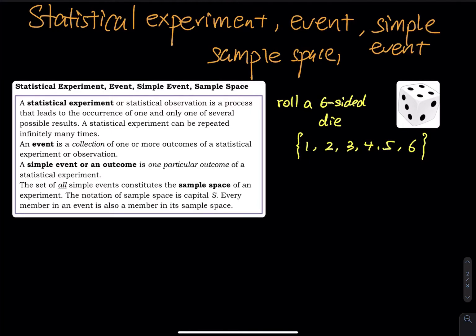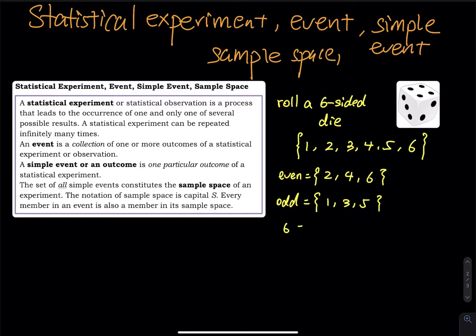For an event — let's say I want to get an even number. How many outcomes do I have in this event? I have two, four, and six. Let's say I want to get an odd number — I have one, three, and five. An event is a collection, so it can be one outcome only. Let's say I want to get a six specifically — just one outcome, you get a six.